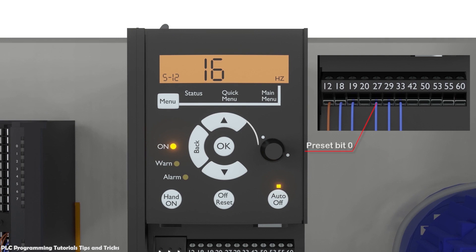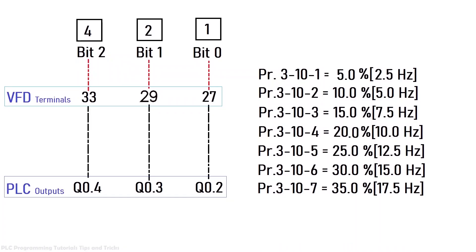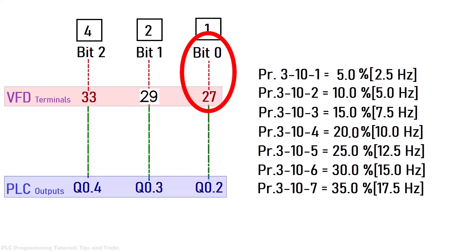Next we will set parameter 5-13 to 17, which sets terminal 29 of the VFD as preset bit 1. Now let's see how these bits can be used to select the preset frequency references. We have VFD digital inputs 27, 29, and 33, which are connected to the PLC digital outputs Q0.2, Q0.3, and Q0.4.